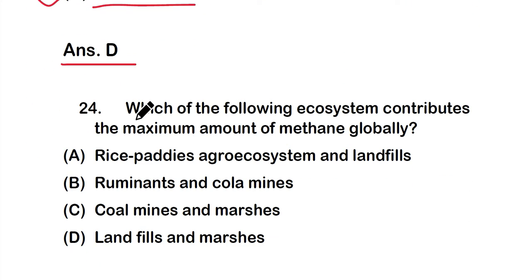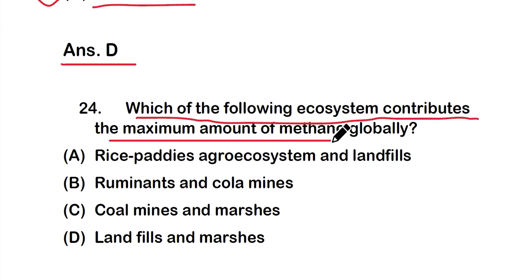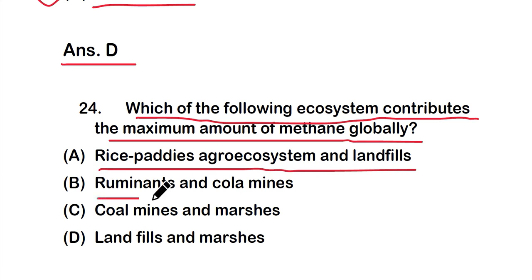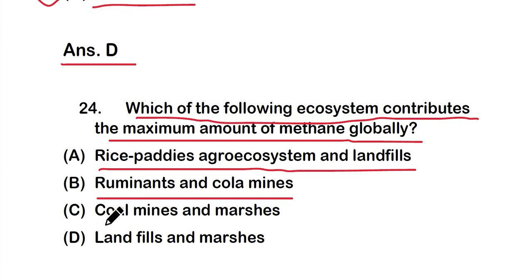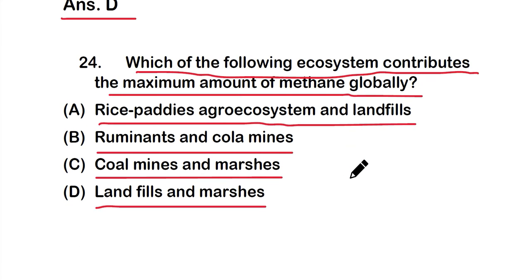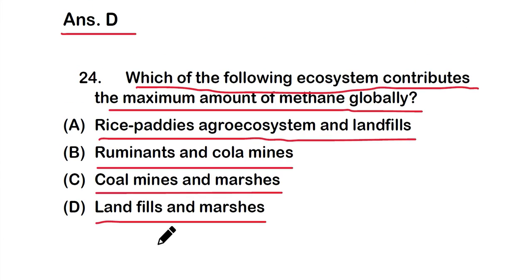Question number 24: Which of the following ecosystems contributes the maximum amount of methane globally? Options: A) rice paddies, agro-ecosystem and landfills, B) ruminants and coal mines, C) coal mines and marshes, or D) landfills and marshes. The right answer is option A — rice paddies, agro-ecosystem, and landfills are the ecosystems that contribute the maximum amount of methane globally.